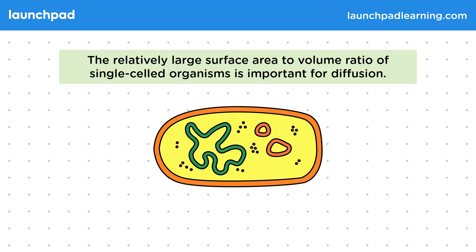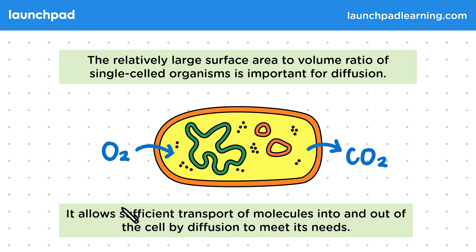This simple diagram shows a single celled organism. It relies on the simple diffusion of oxygen into the cell and the waste product carbon dioxide out of the cell. By having a relatively large surface area to volume ratio, this allows sufficient transport of molecules into and out of the cell by diffusion to meet its needs.